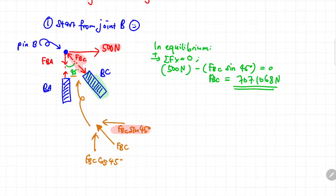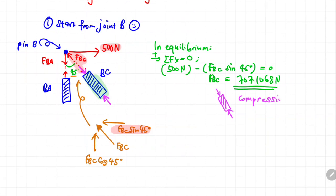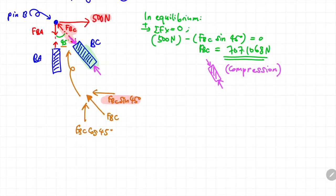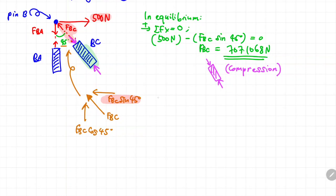Since FBC is positive, the assumed direction of force for joint B and member BC is correct. At the other end of member BC, the force is the same magnitude but opposite direction, due to equilibrium. If we redraw member BC, the forces at each end are pushing inward — meaning member BC is in a compression state.